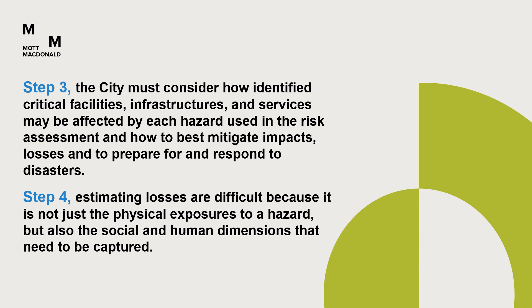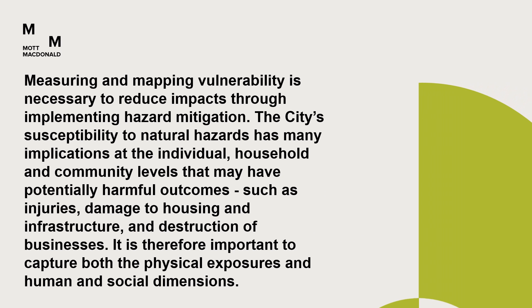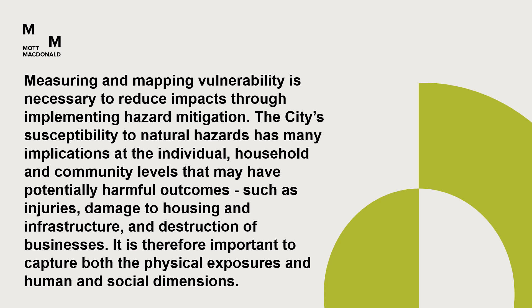Step three: the city must consider how identified critical facilities, infrastructures, and services may be affected by each hazard used in a risk assessment, and how to mitigate impacts and losses, and to prepare for and respond to disasters. Step four: estimating losses is difficult because it is not just the physical exposures to a hazard, but also the social and human dimensions that need to be captured. Step five: measuring and mapping vulnerability is necessary to reduce impacts through implementing hazard mitigation. The city's susceptibility to natural hazard has many implications at the individual, household, and community levels that may have potentially harmful outcomes, such as injuries, damage to housing and infrastructure, and destruction of businesses. It is therefore important to capture both the physical exposure and human and social dimensions.